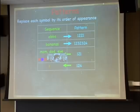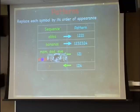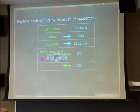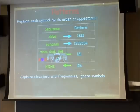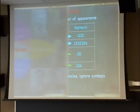One more quiz: give a sequence with pattern 1, 2, 4. The answer is nothing — no sequence can have that pattern, because after seeing symbols one and two, the next new symbol must be called three. The numbers must follow order of appearance without gaps. Patterns capture the frequencies of what we see but ignore and abstract away the actual symbols.